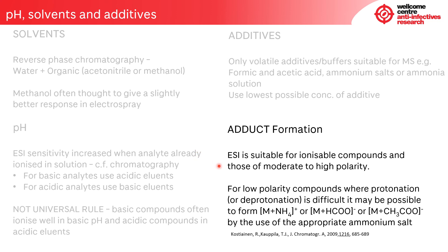As a technique, electrospray is suitable for ionizable compounds and those of moderate to high polarity. They typically form protonated ions in positive ion electrospray and deprotonated ions in negative electrospray. For low polarity compounds where protonation or deprotonation may be difficult, it's sometimes possible to form ammonia adducts, or formate or acetate adducts in negative ion mode, by the addition of the appropriate ammonium salt.